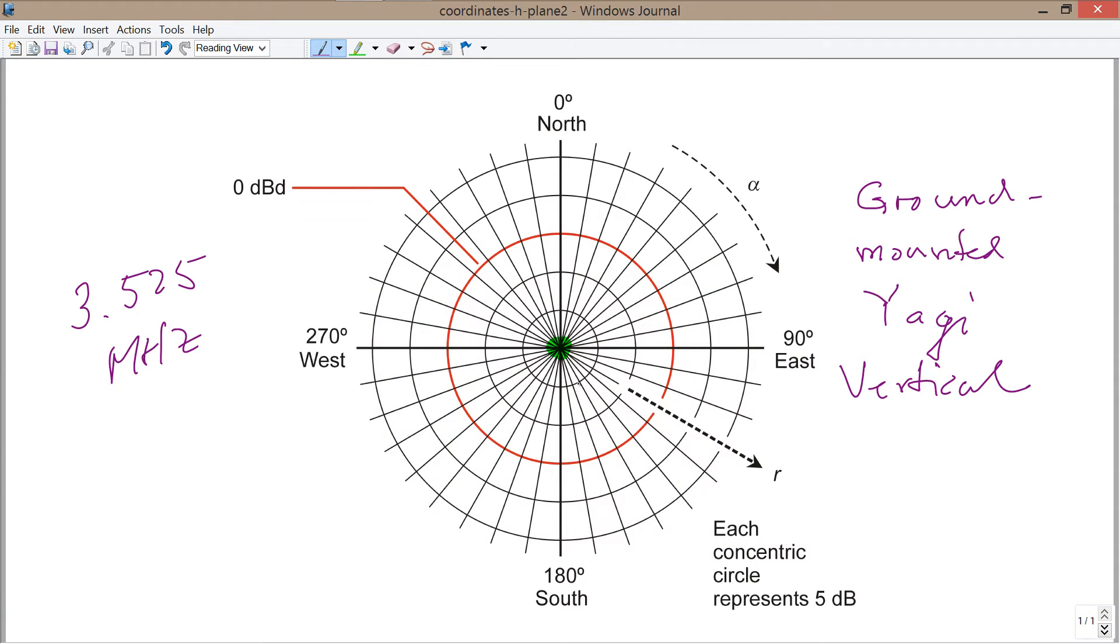Ground mounted, and you have a whole lot of radials here. Now, let's consider this red circle to represent, instead of DBD, suppose that it represents a radius equal to 1 tenth of a wavelength in free space away from the center.